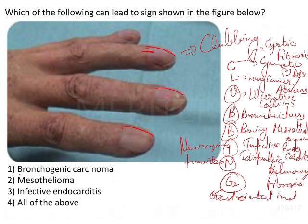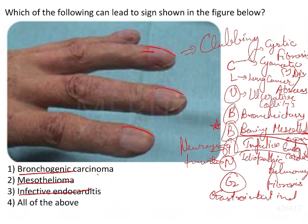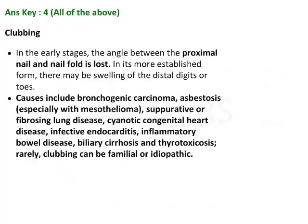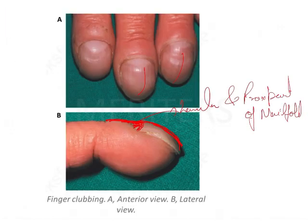If you remember this mnemonic, you will be able to solve 90 percent of questions. Looking at the options: bronchogenic carcinoma is not directly in our mnemonic, but mesothelioma — yes, benign mesothelioma is there — and infective endocarditis is also there. Two of the options match the mnemonic, so the answer is all of the above. You can make smart guesses by remembering this mnemonic for causes of clubbing.